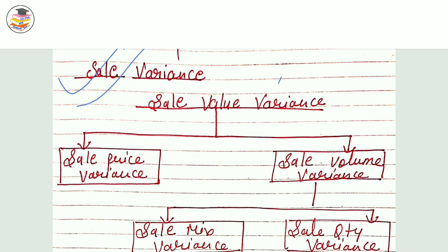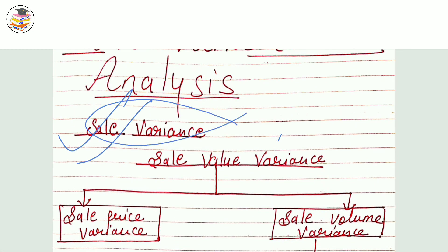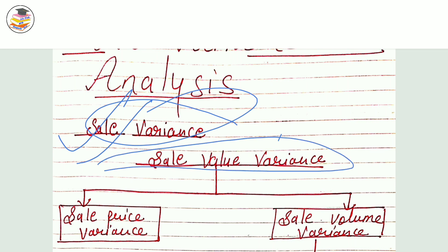We have completed two variances: first is material variance, second is labor variance. Now third is sales variance. In the next video I will start overhead variance. Sales variance we start now because it is very easy, and doing one question on it is more than enough. So I thought let's do sales variance first, then overhead variance.